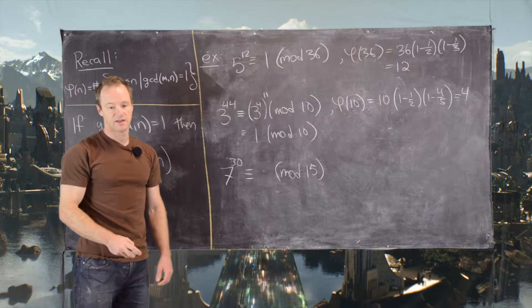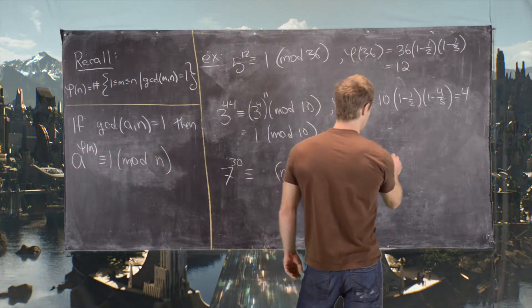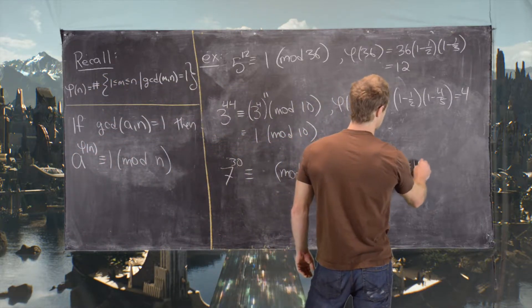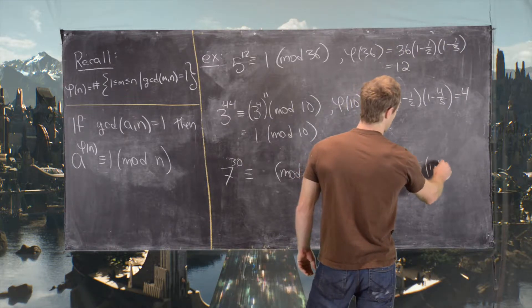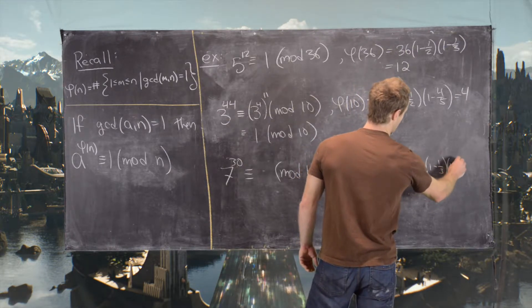We'll use the fact that phi of 15 is 8. So phi of 15 again is 15 times 1 minus third times 1 minus fifth, which is 8.